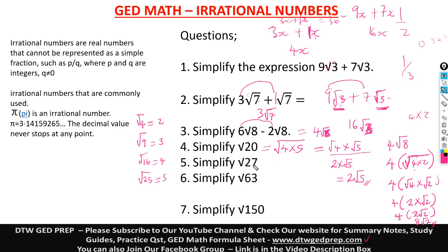Now let's simplify root 27. How can we factor out a perfect square from 27? We can factor out a 9. 9 times 3 gives us 27. So we have root 9 times root 3, and we can find the square root of 9, which is 3 times root 3. So our final answer is 3 root 3. We have simplified this.